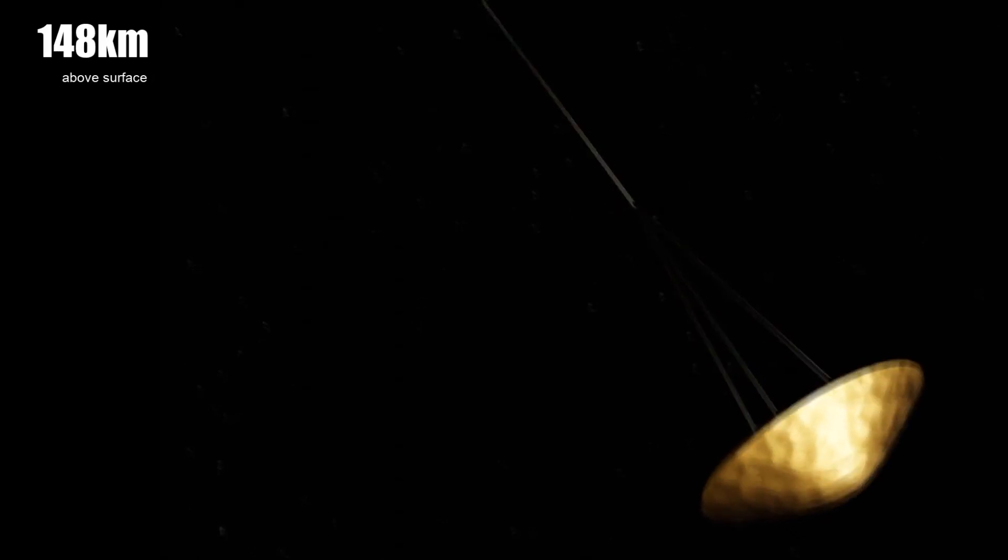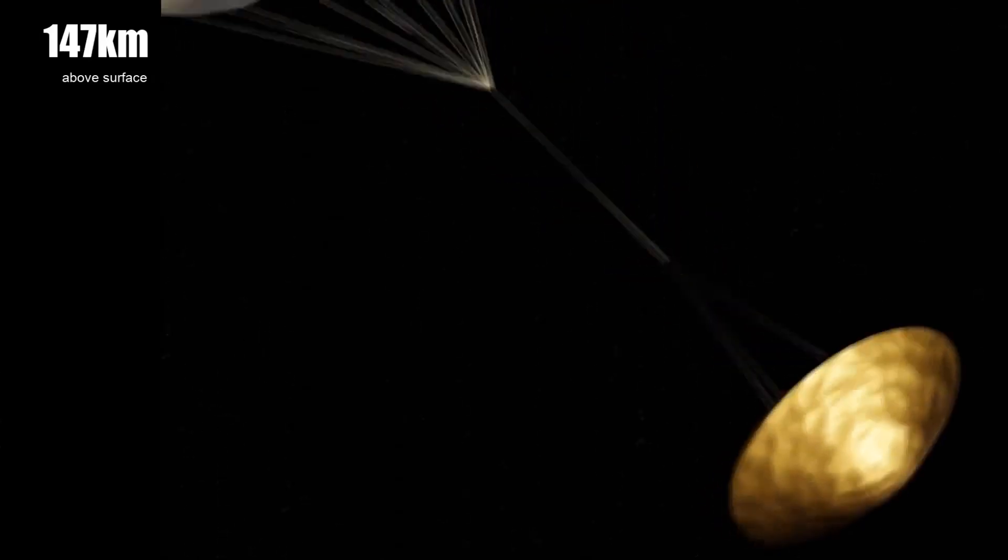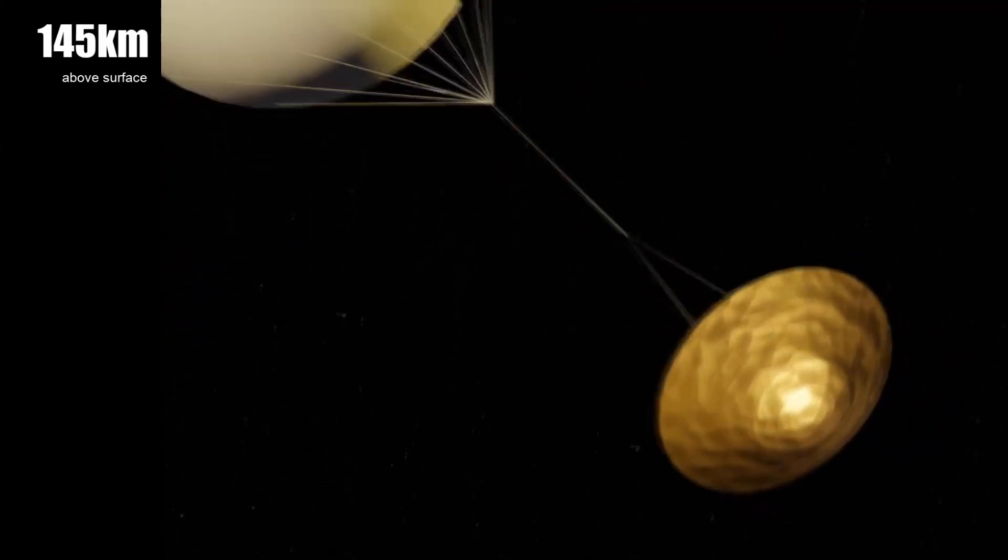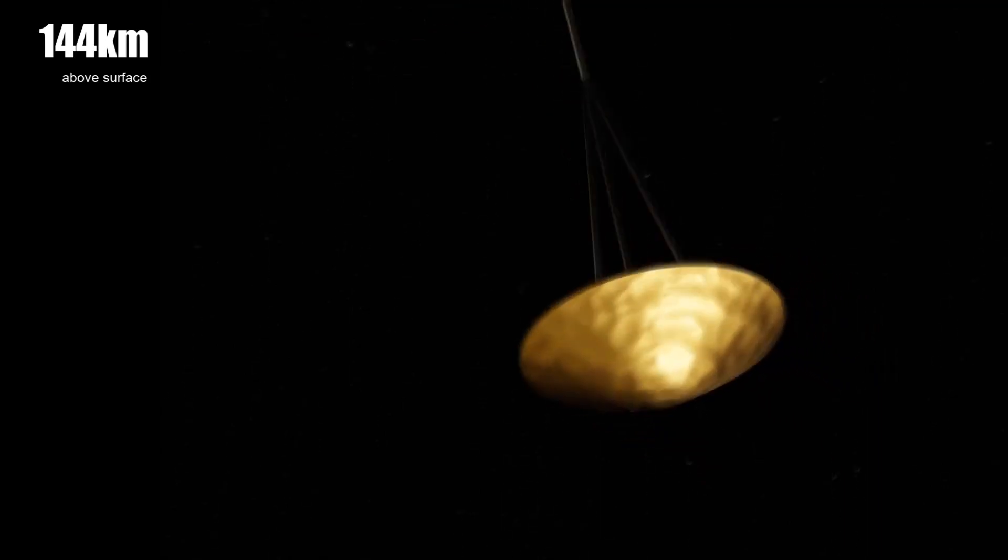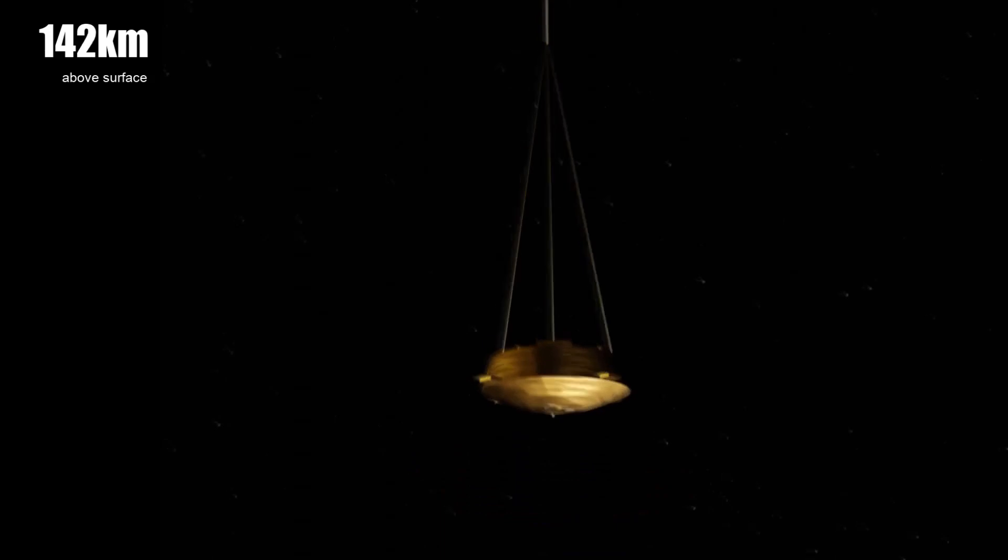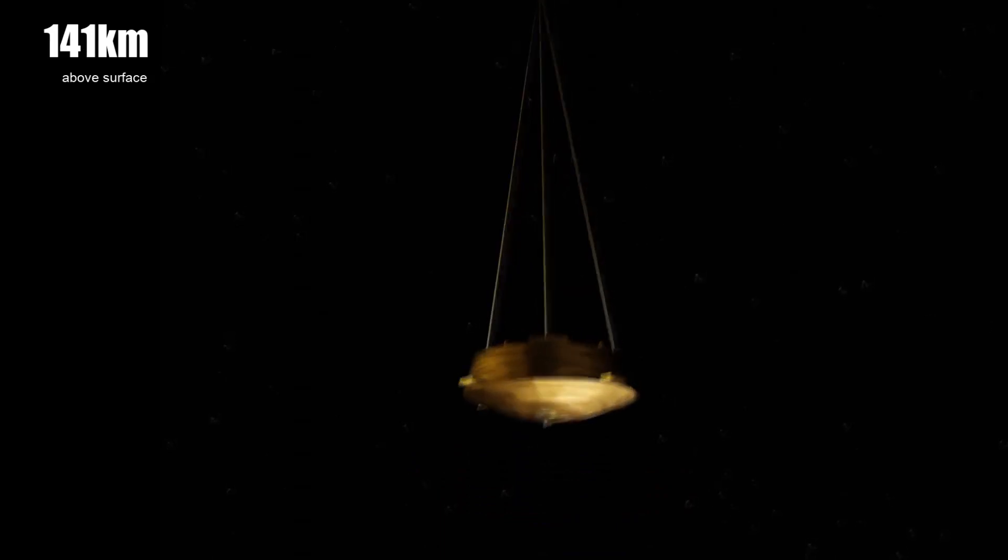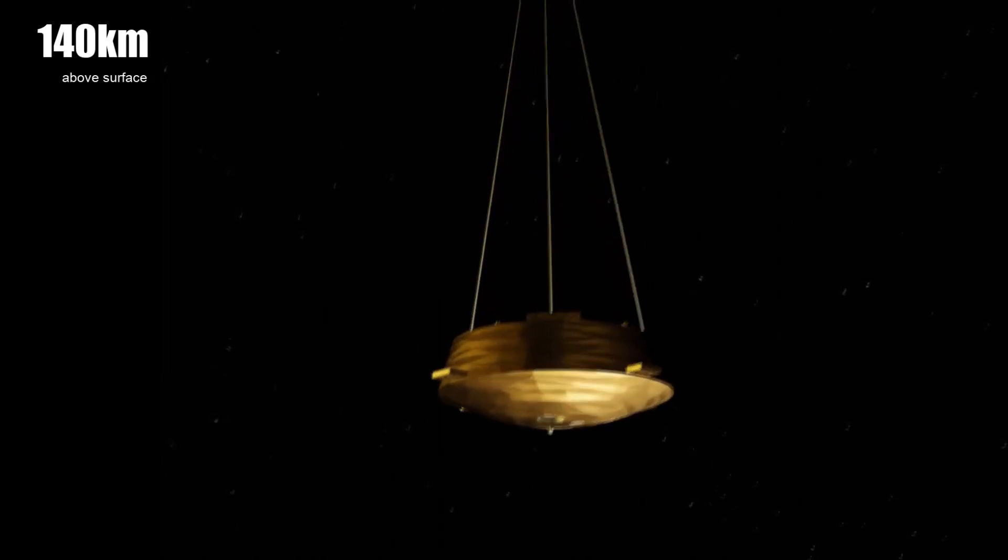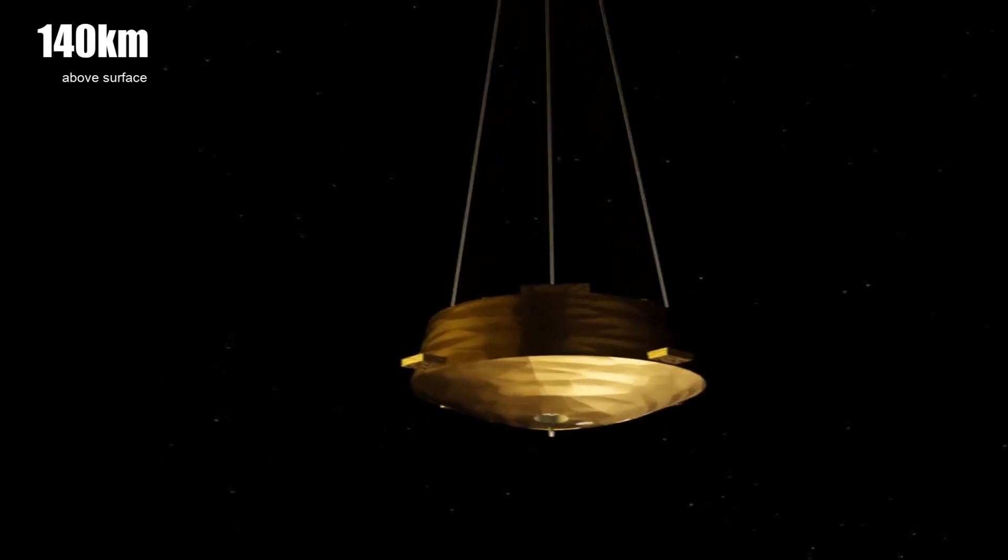About half a minute later, the main chute is deployed. Soon after that, heat shield is jettisoned. Now at 140 kilometers from the surface and moving at 95 meters per second, ACP can finally get to work and do some science.